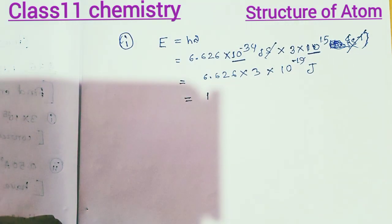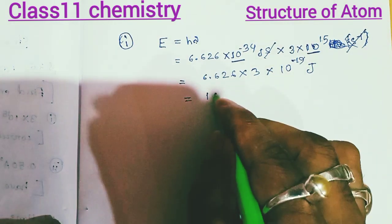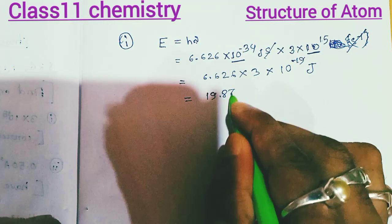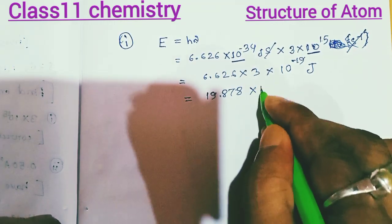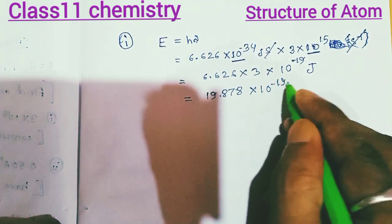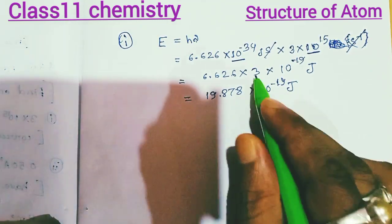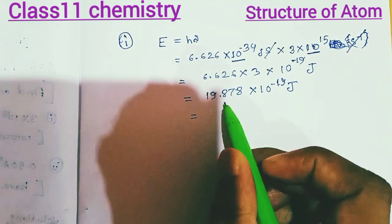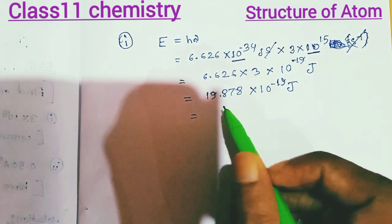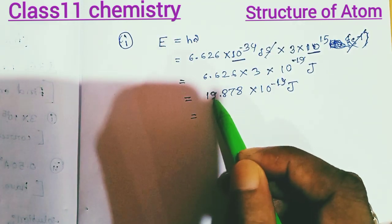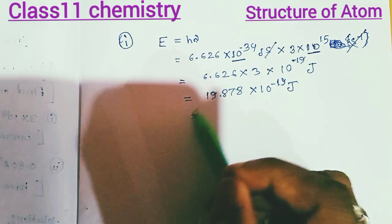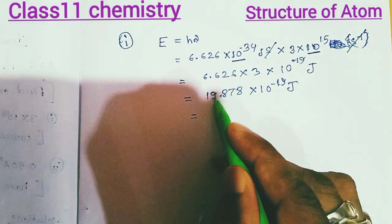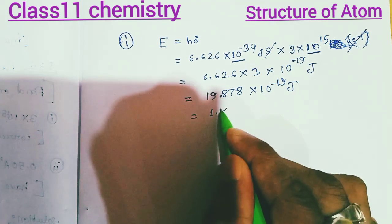The result is 19.7a into 10 to the power minus 19 joules. This is written in scientific notation. Scientific notation is the standard form for expressing such results.